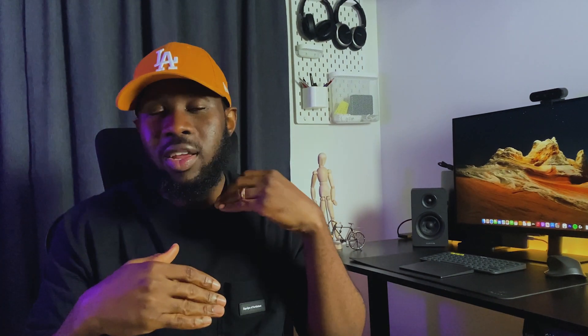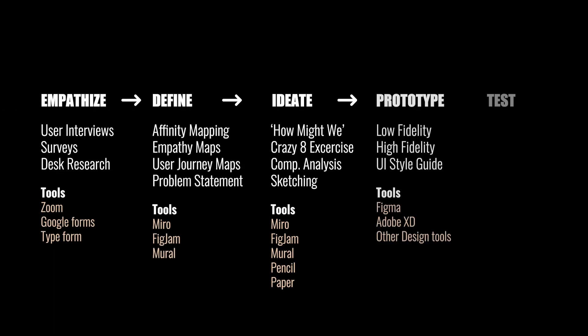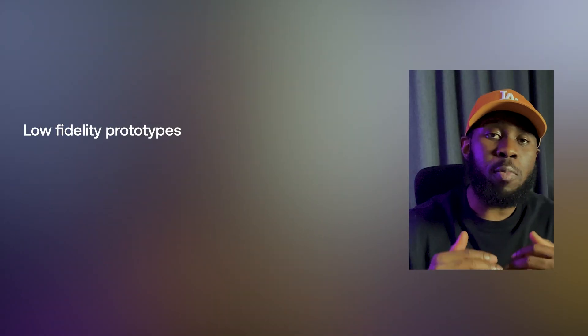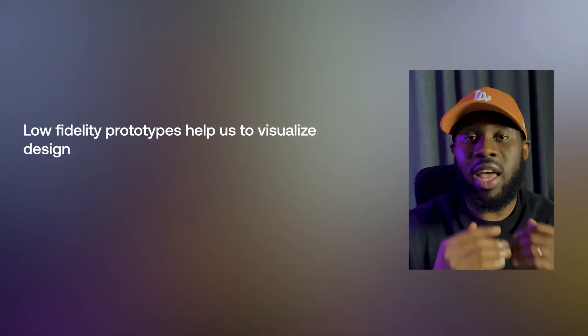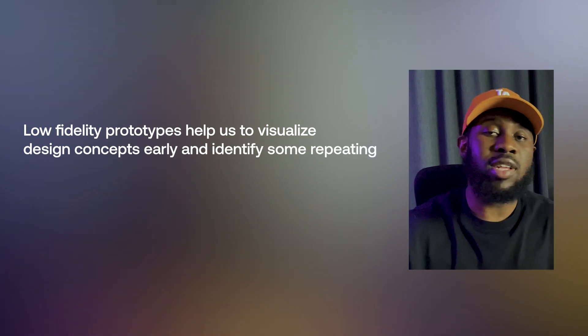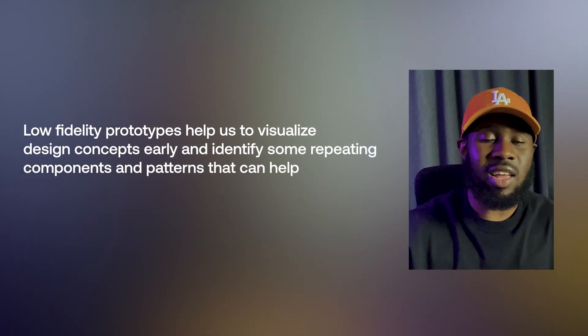I also proceeded to develop some of the ideas from the Crazy 8 Technique further by sketching out some important screens for the user interface. Next, we move to the prototyping phase where we create low and high fidelity prototypes of our solution. Most of the time, I start the prototyping phase with low fidelity prototypes, and other times I move straight to high fidelity — mostly because I have a design system in place that can guide me. Low fidelity prototypes help us visualize design concepts early and identify repeating components and patterns that can help users navigate the app easily.